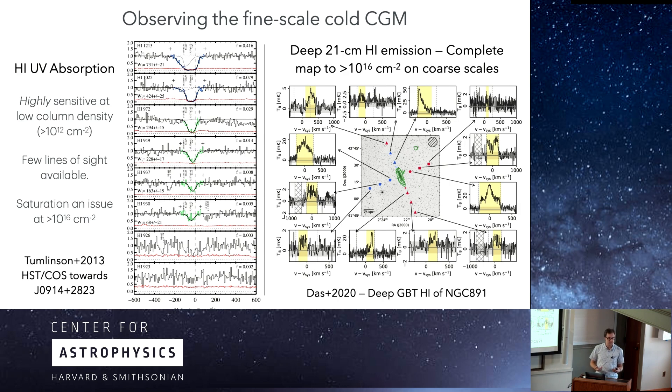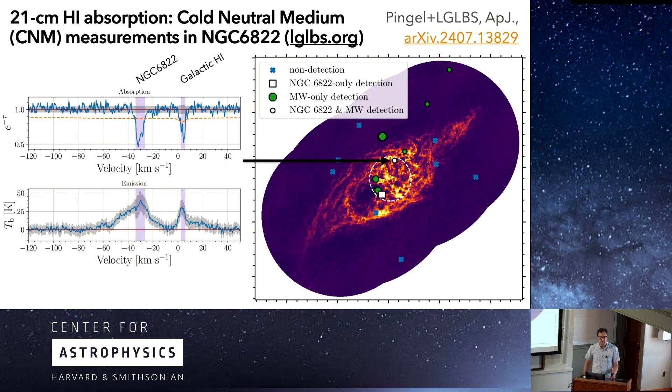There's one other way to use the 21-centimeter line, and that's in absorption. The absorption is really nice because it's basically just tracing opacity. So it's a very clean tracer of the cold neutral medium, your 100-kelvin gas, the phase that's most similar to the molecular phase. The results I'm showing here are brand-new work from our local group L-band survey. This is work led by Nick Pingel.